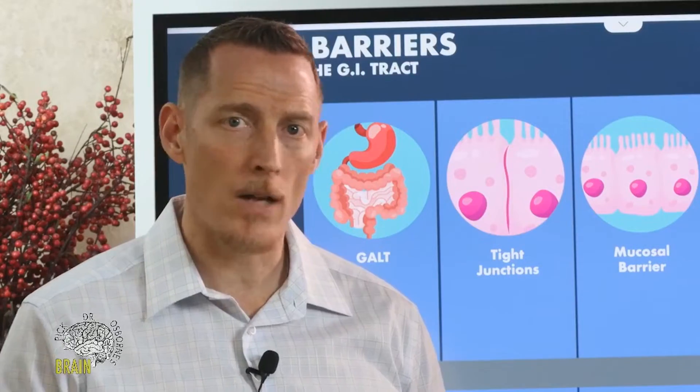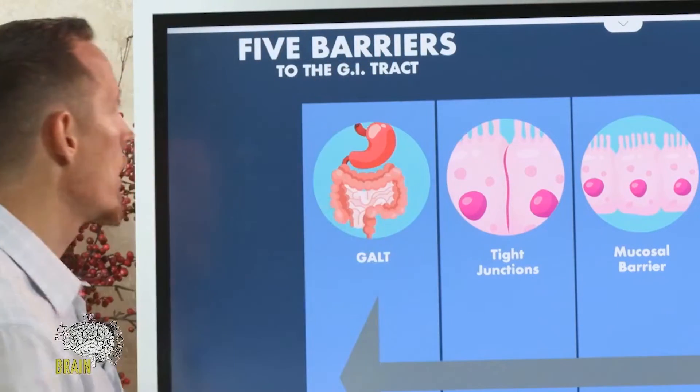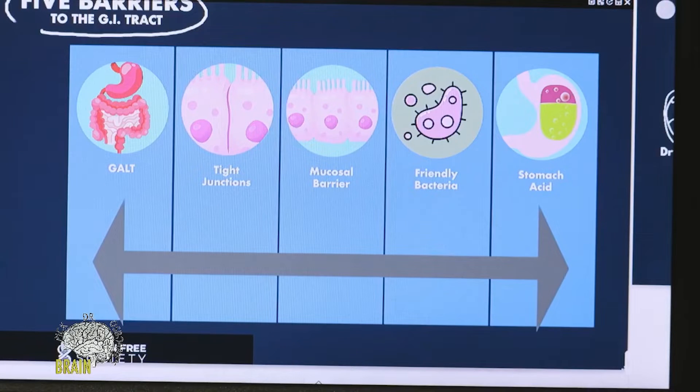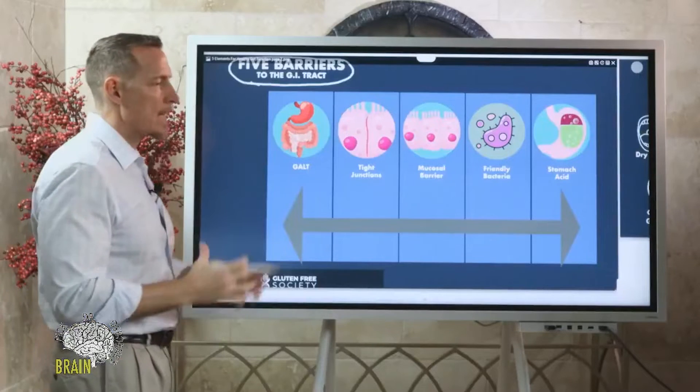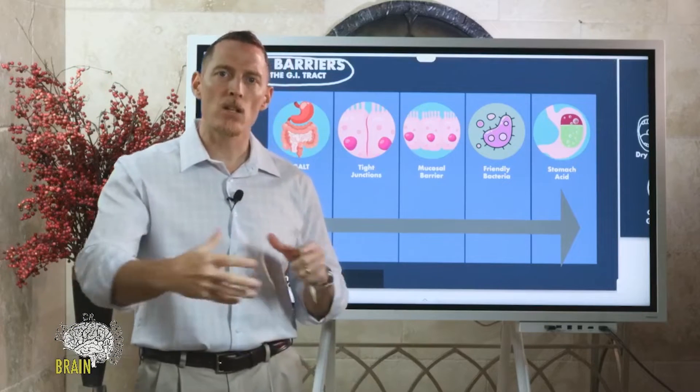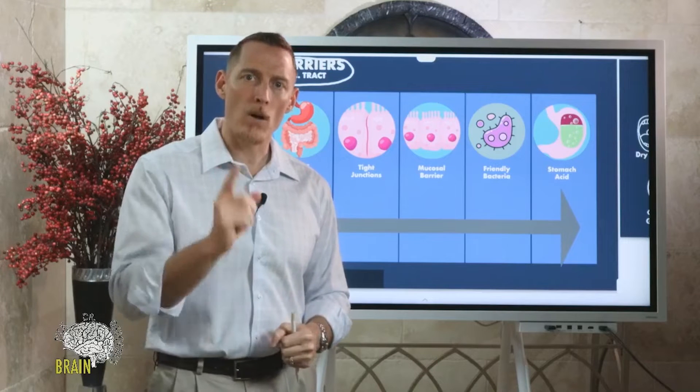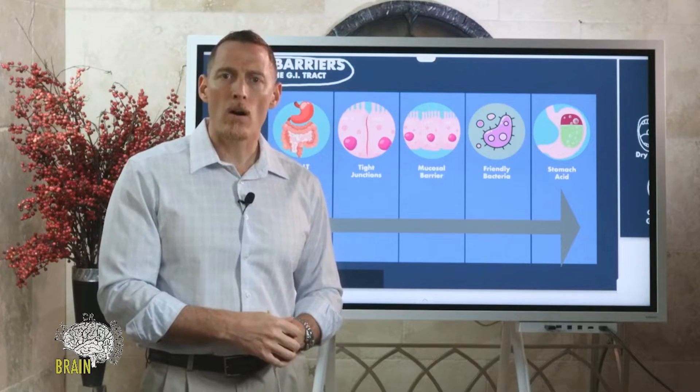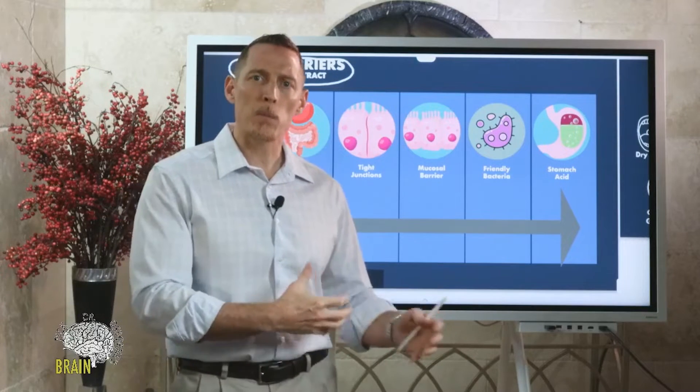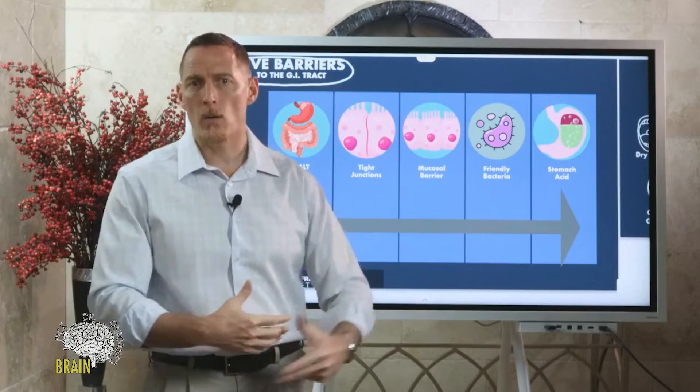It's not connected directly to your bloodstream. That's why we have barriers - barriers to the GI tract, meaning they help keep the quarantine zone of your gut from leaking into your bloodstream. Imagine poop leaking into your bloodstream - that's what we don't want.